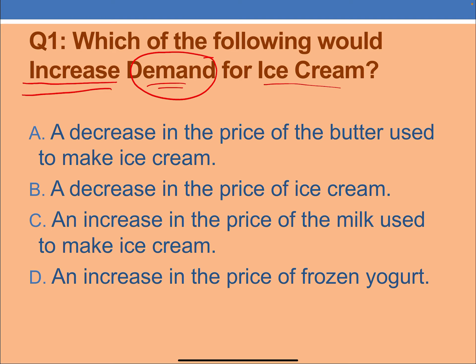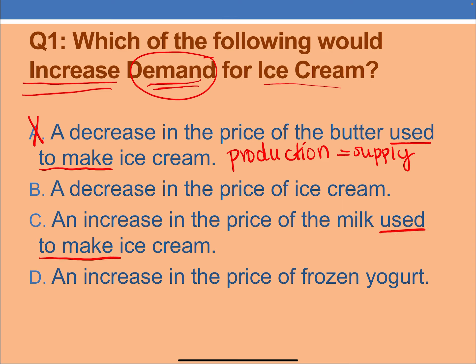A hint on how to work through these: find anything that seems like it's talking about supply — that won't be the right answer since the question asks about demand. Option A says 'a decrease in the price of the butter used to make ice cream' — the phrase 'used to make' screams production, which is an impact on supply, not demand. So A is out. Similarly, option C also contains the phrase 'used to make,' meaning it's dealing with supply. C is not the right answer either.